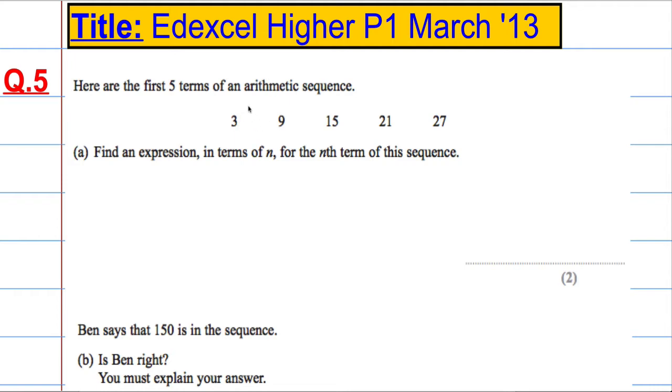From 3 to 9 is adding 6. From 9 to 15 again is adding 6. 15 to 21, again we're adding 6 and this is also adding 6.